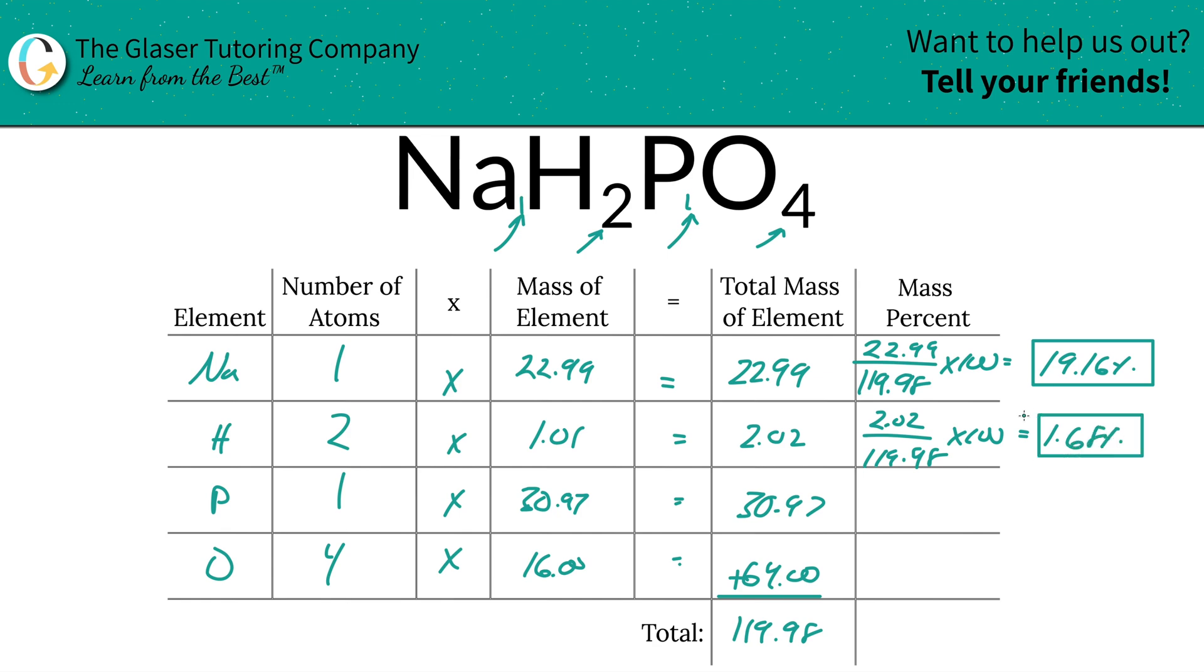Then phosphorus—30.97 divided by 119.98 times 100. Remember, this is a simple percent calculation: part over whole times 100. And we get an answer here roughly 25.81 percent.